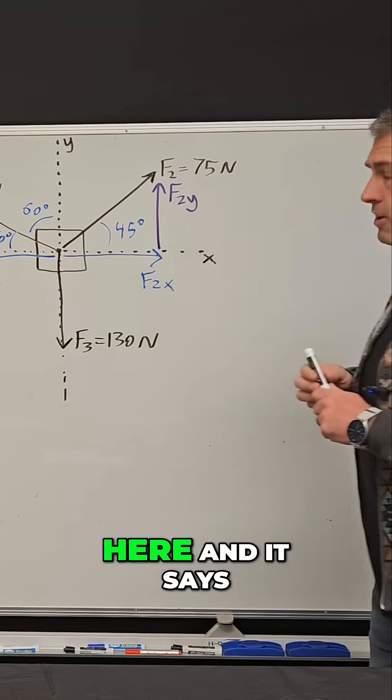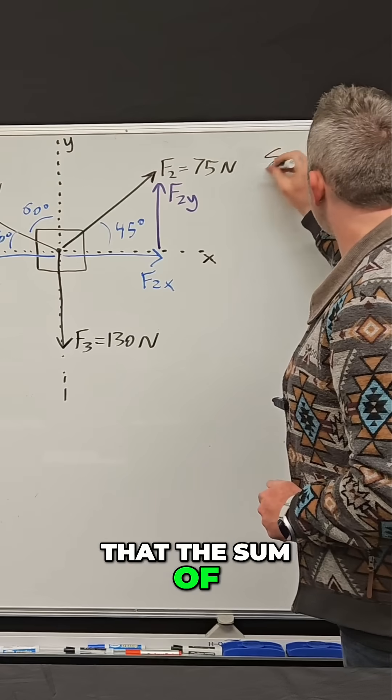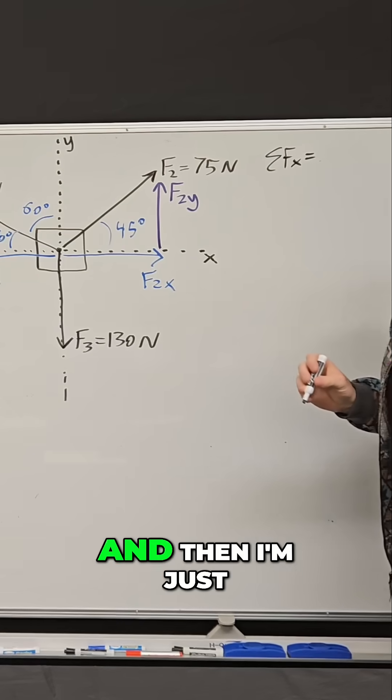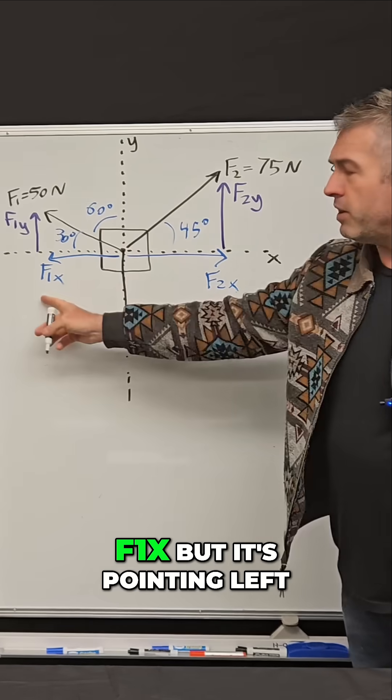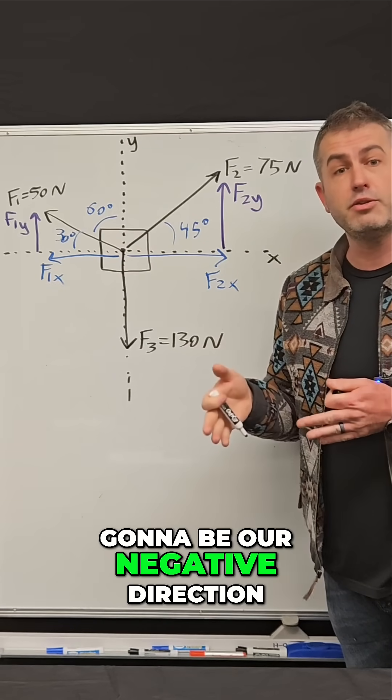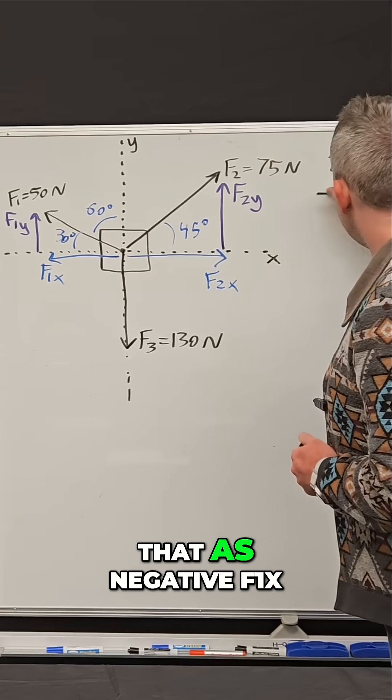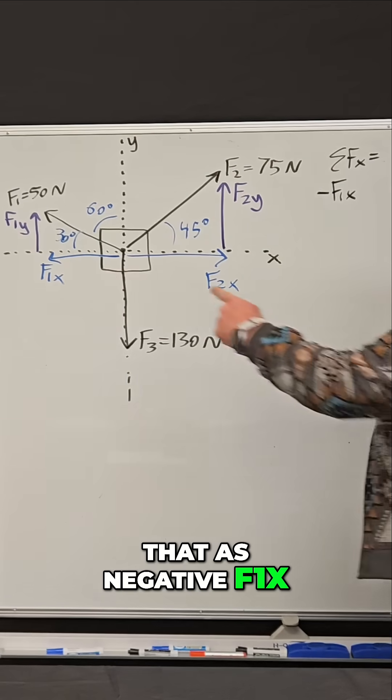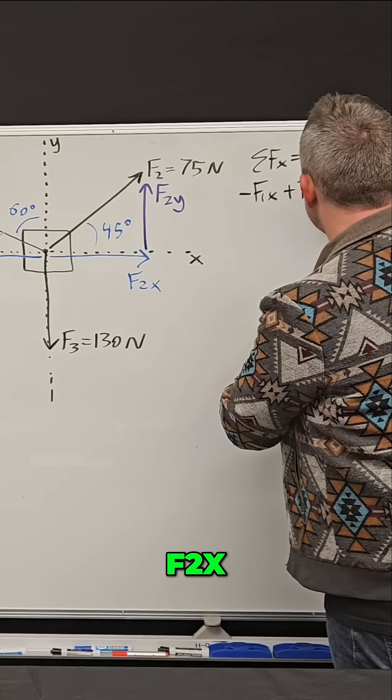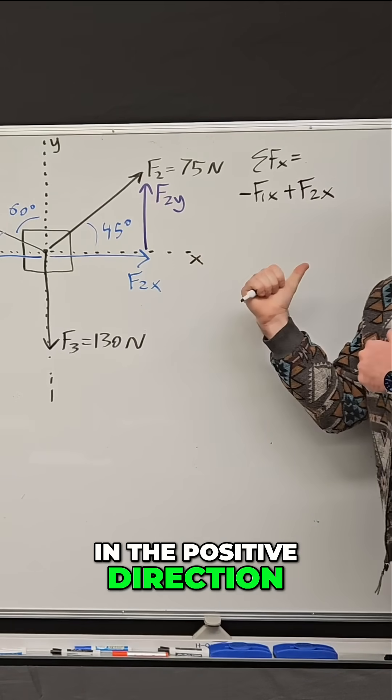I'm going to write an equation that says the sum of all forces in the x direction equals, and then I'll start adding them up. I have f1x pointing left, and left is our negative direction, so I'll label that as negative f1x. Then I add f2x, so plus f2x, because this force is in the positive direction.